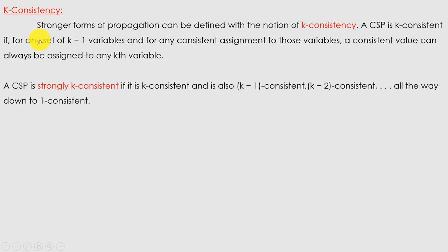After that, we look at k-consistency. Stronger forms of propagation can be defined with the notion of k-consistency. A CSP is k-consistent if for every set of k−1 variables and for any consistent assignment of those variables, a consistent value can always be assigned to any kth variable. A CSP is strongly k-consistent if it is k-consistent and also (k−1)-consistent, (k−2)-consistent, all the way down to 1-consistent.